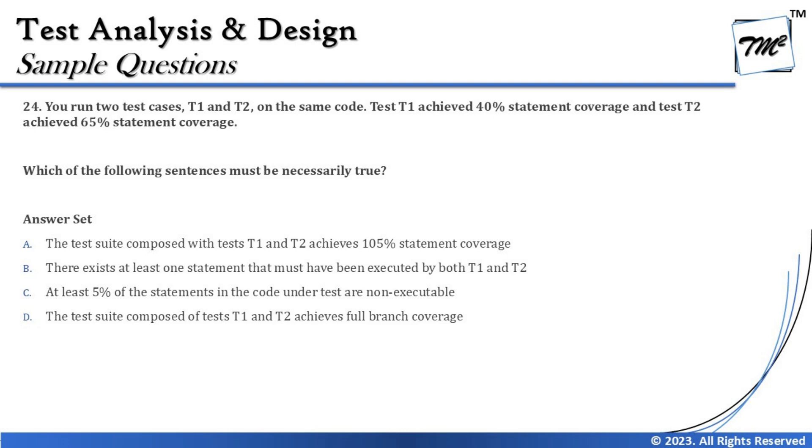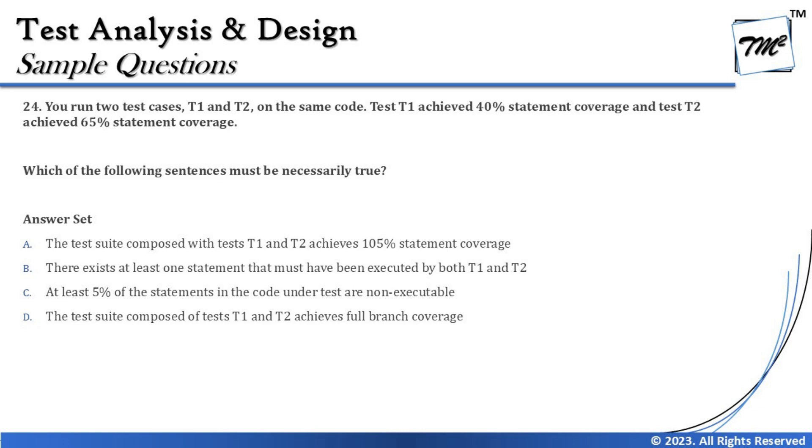Option B says there exists at least one statement that must have been executed by both T1 and T2. That makes sense because T1 covers 40% and T2 covers 65%, so T2 is likely covering a longer path than T1, and they may share some common code. Option C says at least 5% of statements in the code under test are non-executable. Two problems: we cannot make such inverse calculations, and statement coverage only talks about executable code — never about non-executable code.